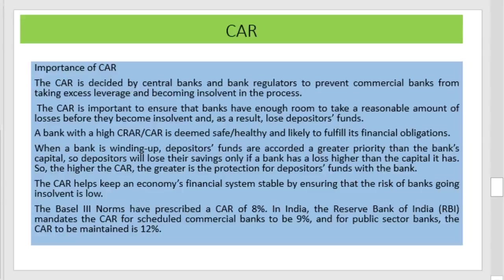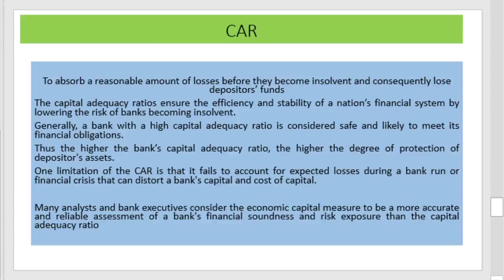The importance of the capital adequacy ratio can be summarized as: first, it ensures that banks have enough room to take a reasonable risk; second, it protects the interests of depositors, and a higher CRAR is a symptom of good bank health; third, it helps keep an economy's financial system stable. Basel norms have prescribed a capital adequacy ratio of 8%. The Reserve Bank of India mandated CAR for scheduled banks to be 9%, and for public sector banks to be 12%. It helps absorb reasonable losses and ensures the efficiency and stability of the nation's financial system.